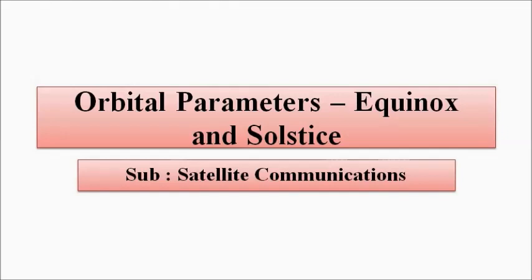We will continue our discussion with satellite communications. So far we have discussed some basic concepts related to orbital mechanics, the various forces acting on satellites, Kepler's laws of planetary motion, various orbital parameters such as the ascending and descending nodes, semi-major and semi-minor axis, apogee, perigee, and eccentricity. In this video we are going to discuss two events related to the movement of the earth around the sun and the rotation of earth about its own axis.